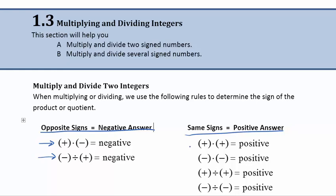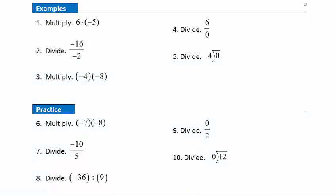A positive times a positive, we know we get a positive answer. If we take a negative times a negative, we're also going to get a positive answer. And the same thing holds true for division — two positives or two negatives are going to give us a positive answer. Now let's take a look at some examples that will help you understand how to multiply and divide positive and negative integers.